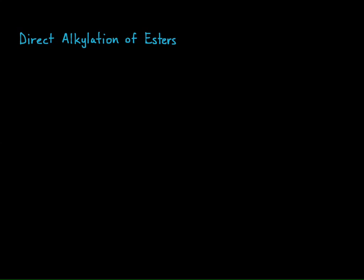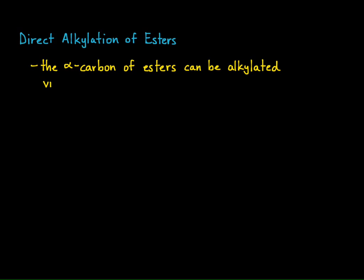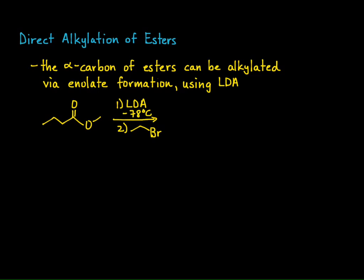Now let's take a look at alkylation of esters. We saw that esters don't form enolates as readily as aldehydes and ketones, so we're going to use LDA to ensure enolate formation. This isn't often done, but it certainly can be. If I take methylbutanoate and react it with LDA to form my enolate, then react that with ethyl bromide, I can ethylate that alpha carbon and get my product. The easiest way to alkylate an aldehyde, a ketone, or an ester is to treat it with LDA followed by whatever primary alkyl halide you want, and you can get alkylation in good yields.